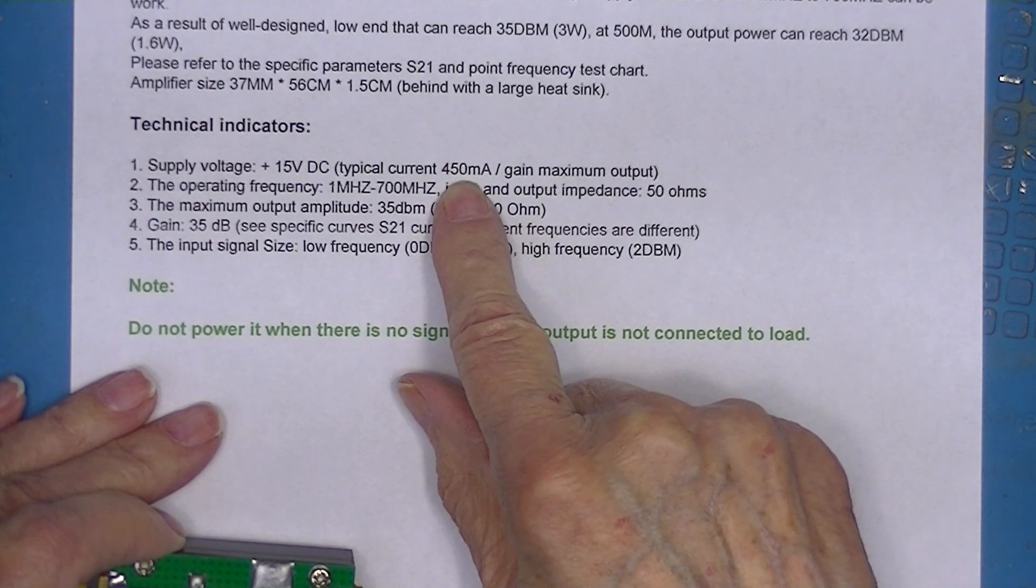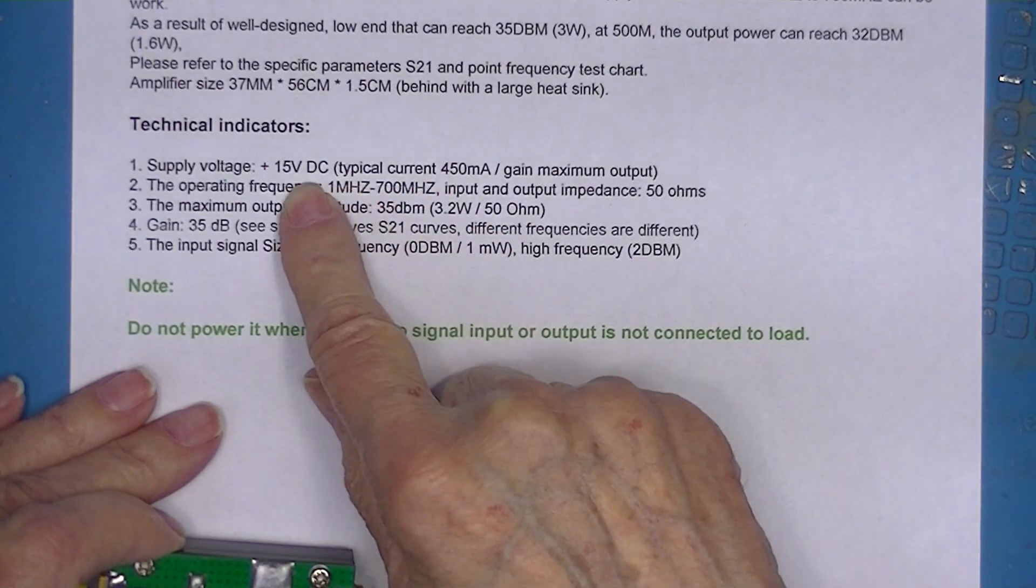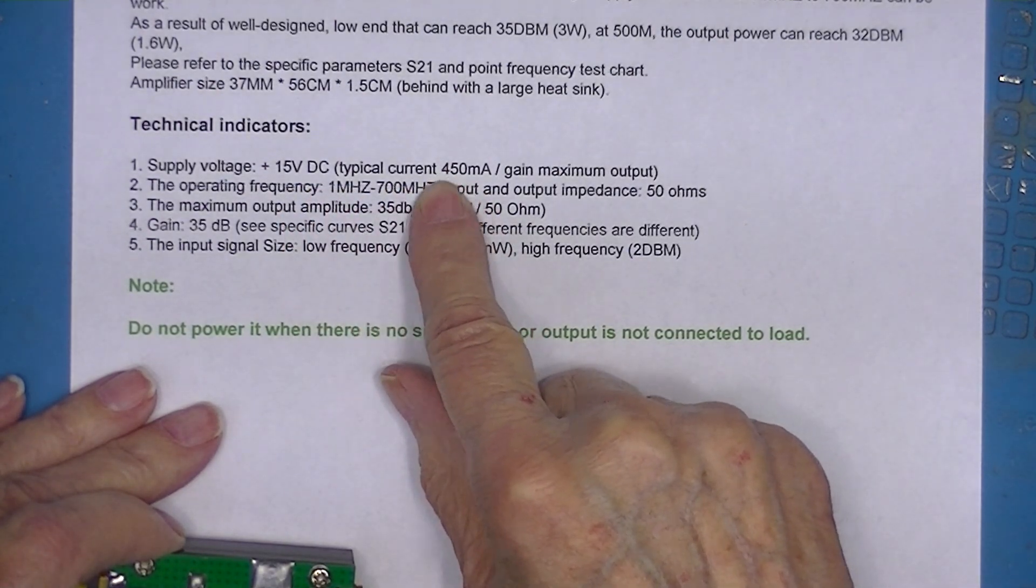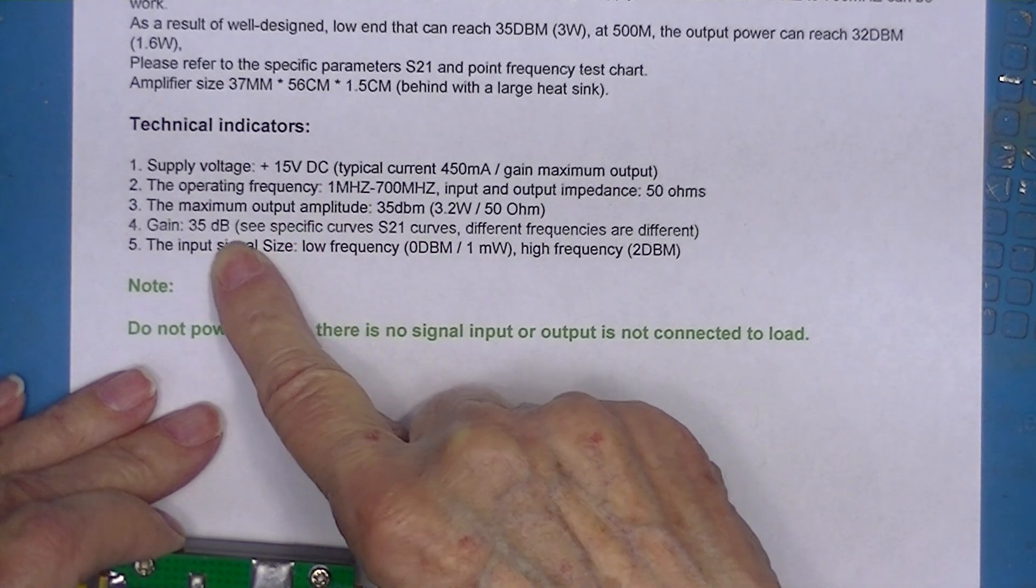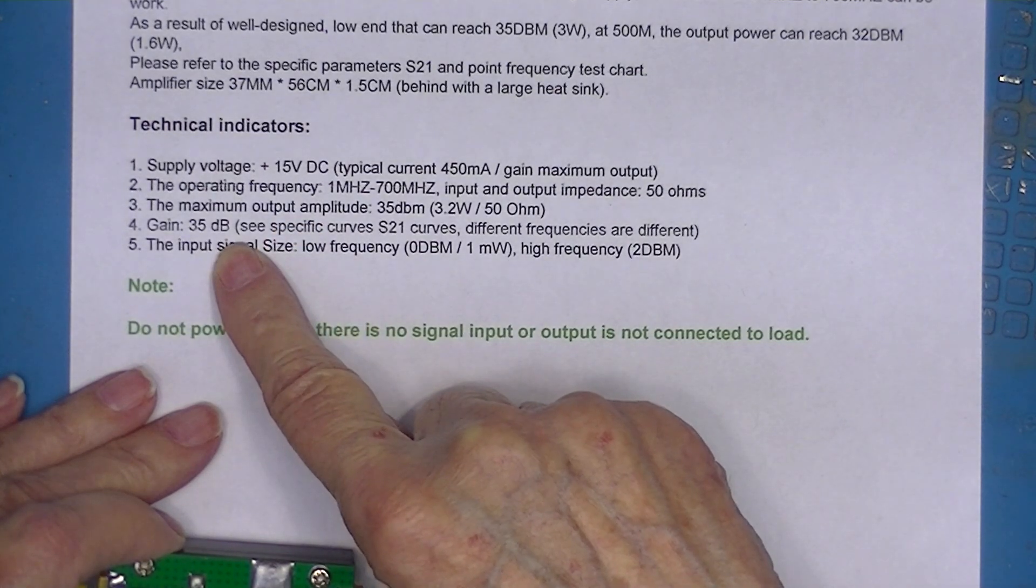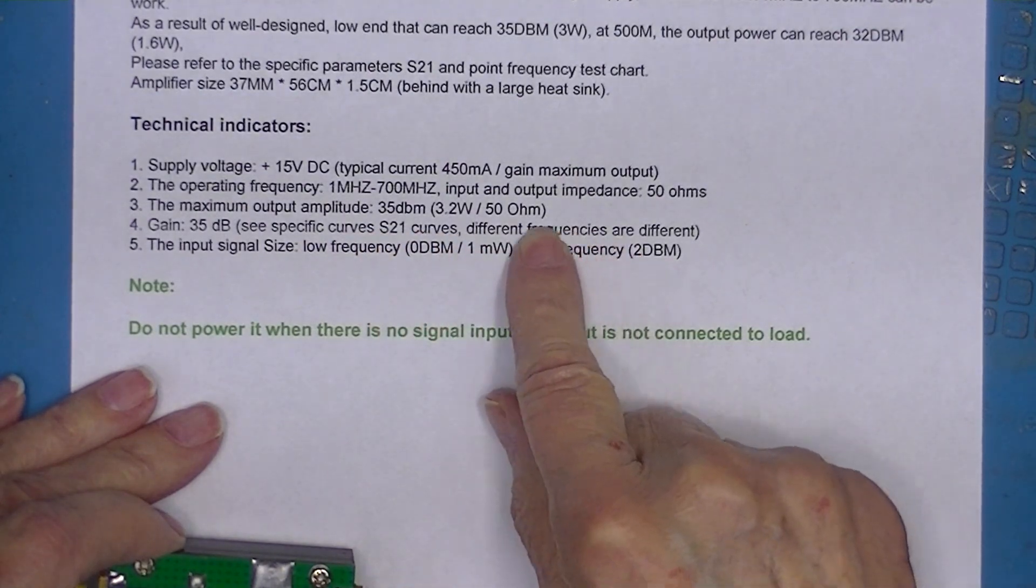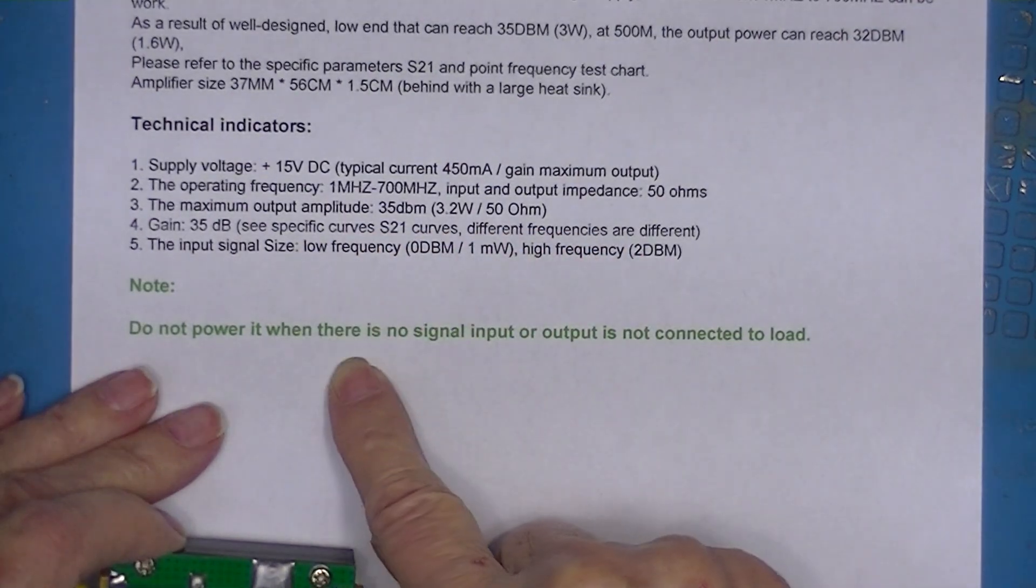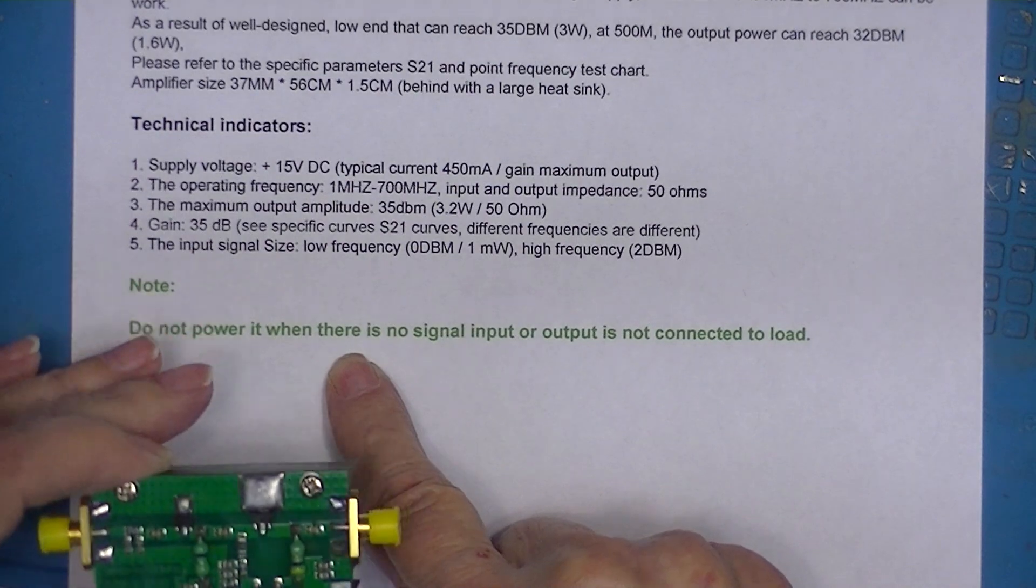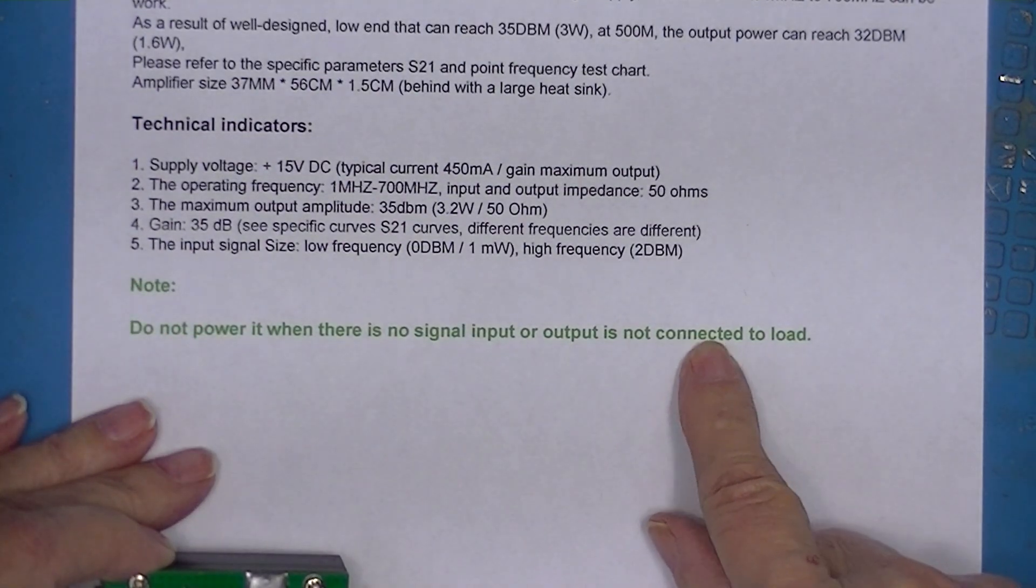Okay, a half amp. So 15 volts at half an amp. 35 dB of gain. But it says it falls off. And it cautions me not to power it up without a load. So I'll hook up some power leads here and we'll look at it on the spectrum analyzer.